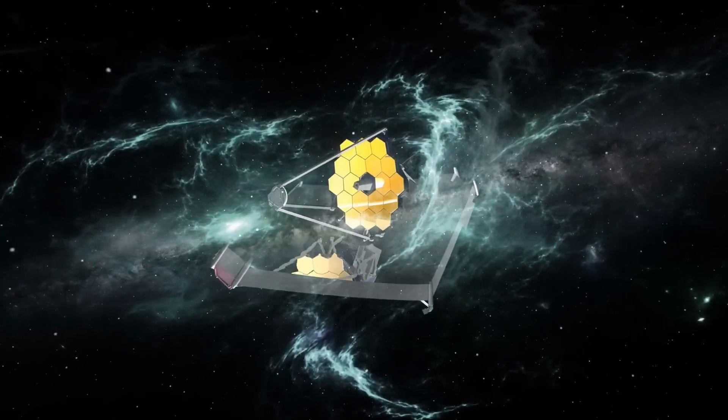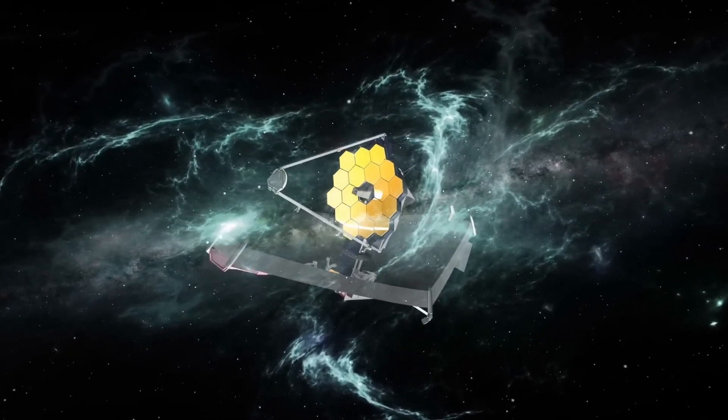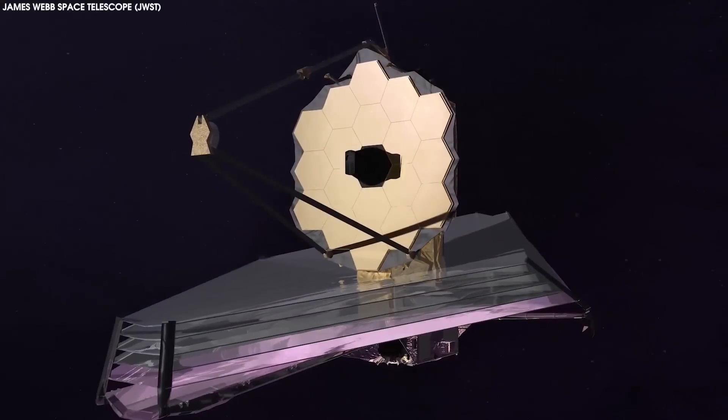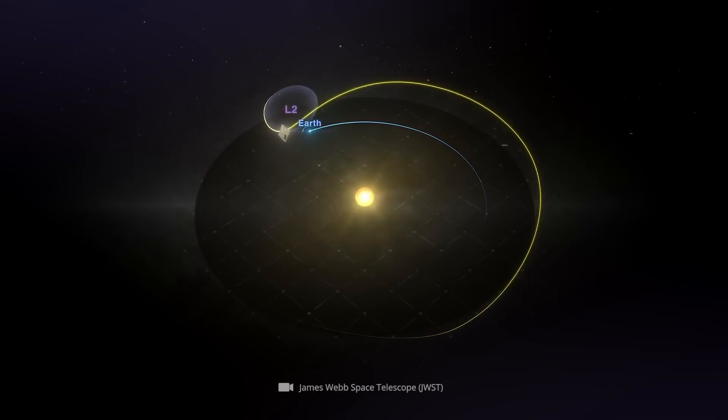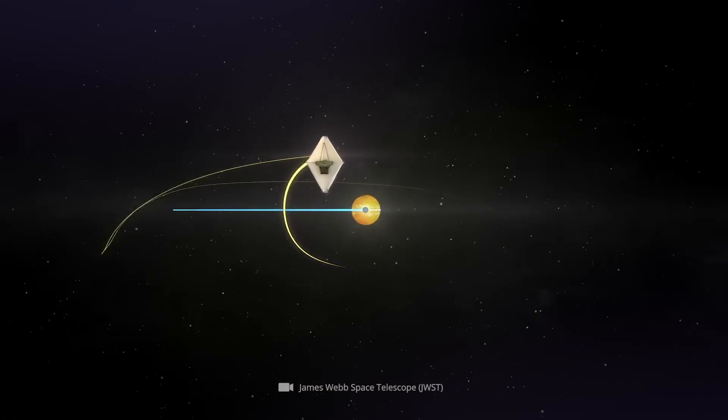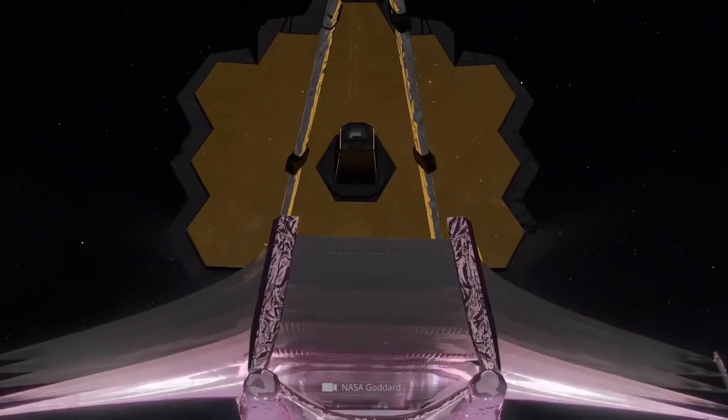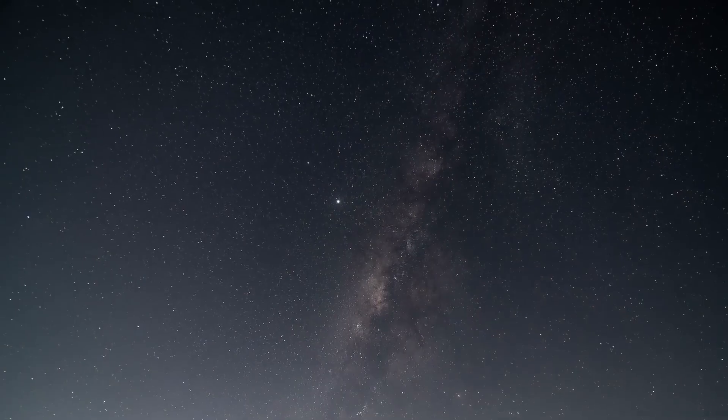The vast universe holds many secrets, and the James Webb Space Telescope, JWST, is on track to uncover some of them. Described as a time machine, the Webb Telescope itself doesn't travel through time directly. However, what it does is much more profound than just giving us clues about the past.